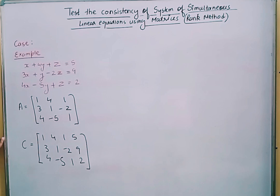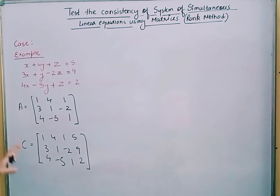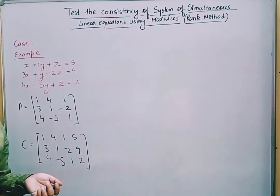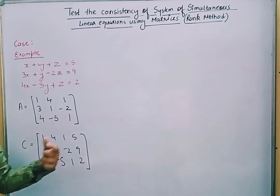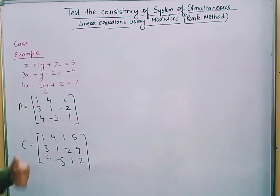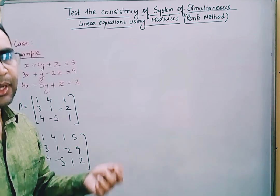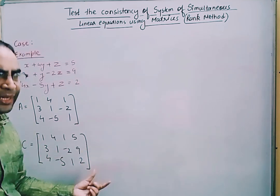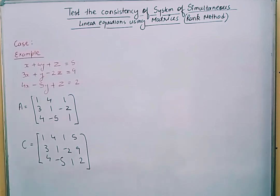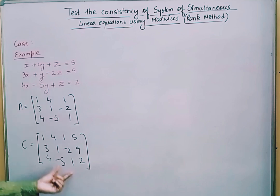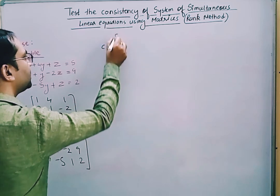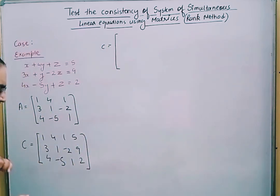We will find the rank of the augmented matrix and rank of A by converting this matrix into the upper triangular matrix. I have already made videos on upper triangular matrices and how to find the rank of a matrix — you can go to the channel playlist and watch those. We will also solve this completely here, using matrix C and converting it into upper triangular form to find the rank of both matrices.